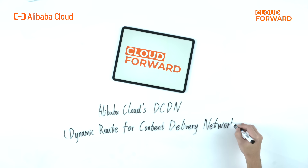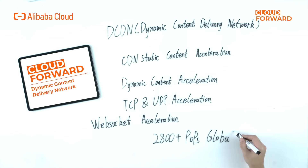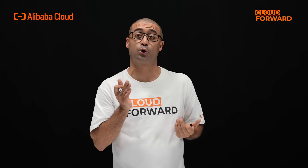To address both static and dynamic content delivery, we strongly recommend Alibaba Cloud Dynamic Route for Content Delivery Network, or DCDN in short. On top of basic CDN, which is designed for static content acceleration, our DCDN solution supports both static and dynamic content delivery, adding features such as TCP, UDP, and WebSocket acceleration — so that no matter your business is a blog, an e-commerce site, a social media platform, or streaming media site, DCDN is the ideal solution to deliver your content worldwide.